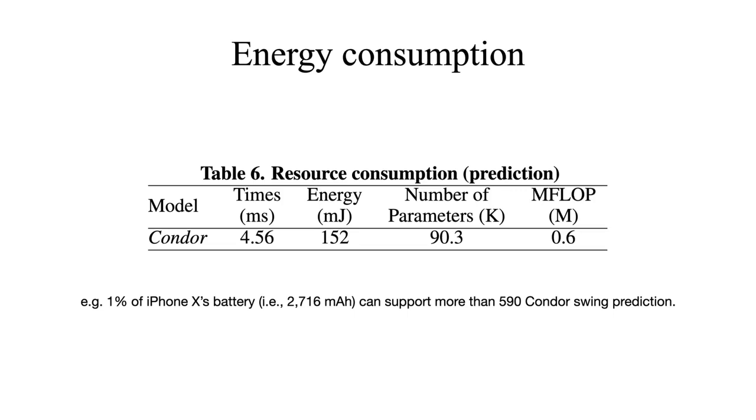We also investigated the energy consumption in our proposed model. We see that Condor has only 0.6 million FLOPs and 9.3 million parameters. We tested the model through CoreML in iOS 13 on iPhone X. We see that for each inference, it costs only 4.56 milliseconds and only 152 millijoules, which implies that only 1% of iPhone X battery can support more than 590 Condor swing predictions.